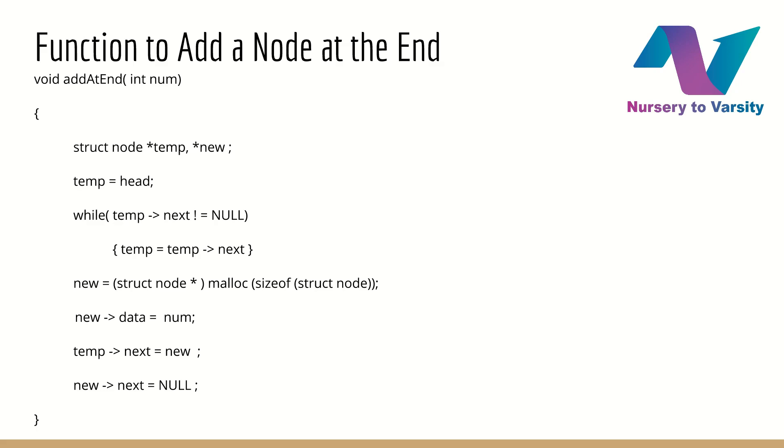New arrow data equal to num. Let's set num to the data field of new node. This is step 6, according to our algorithm. Temp arrow next equal to new. For adding the newly created node after end. After this, temp arrow next will contain the new value. And new arrow next equal to null. This step done to make sure that last node should contain null in next pointer part.